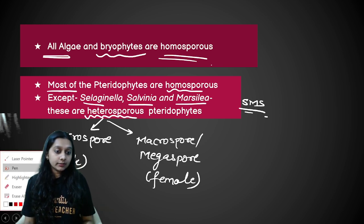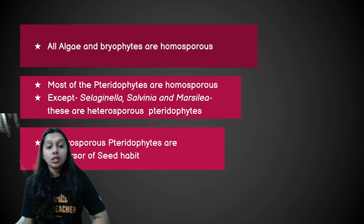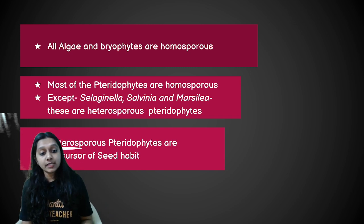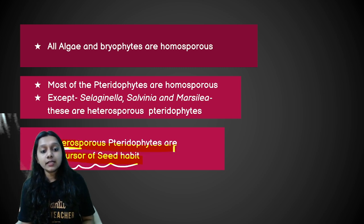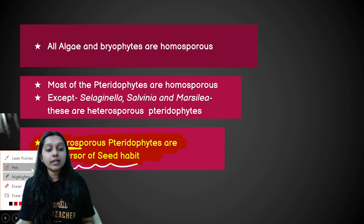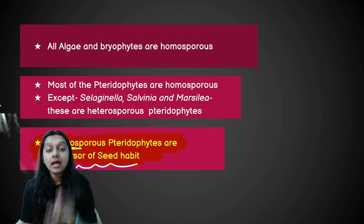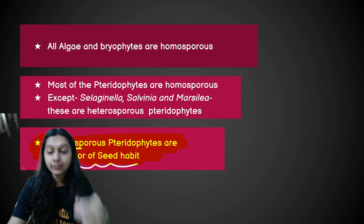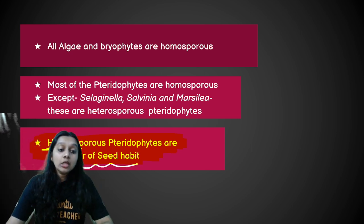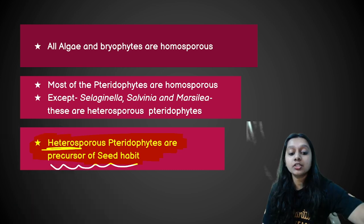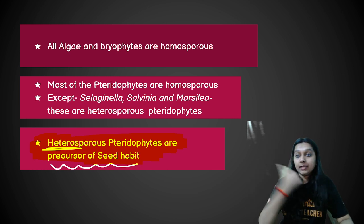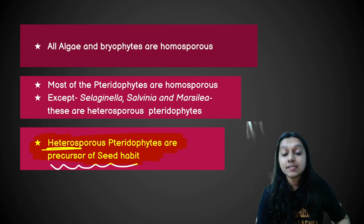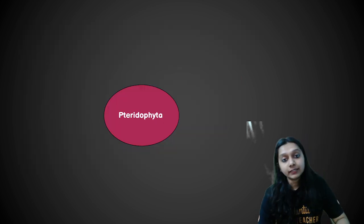This is very important: heterosporous Pteridophytes — Selaginella, Salvinia, and Marsilia — are the precursors of seed habit. They are the ancestors of gymnosperms. So gymnosperms, which show seed habit, their ancestors are heterosporous Pteridophytes. Do not forget this.